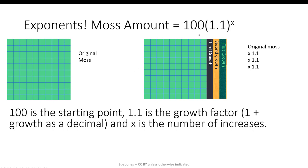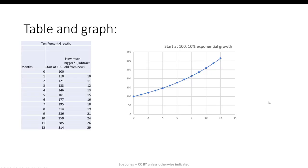100 is the starting point. 1.1 is the growth factor, 1 plus the growth as a decimal. And x is the number of increases. Here's our time and the amount of moss on a table and a graph, as well as how much it grew. It's not the same. You can see we're gaining more every month, but we are multiplying by the same factor, 1.1, each time.